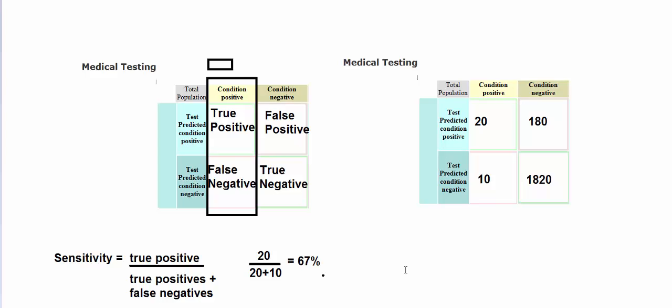One way you can think about sensitivity, typically sensitive people, if you think about it in an emotional sense, sensitive people are good at picking up on feelings. Maybe sensitive people are good at picking up when someone is sad or depressed or down, when someone has got something going on. Here the sensitivity looks at when you got something going on, when you got a disorder, does the test tell you you have that disorder?